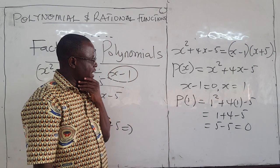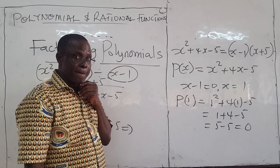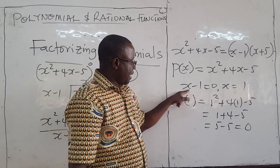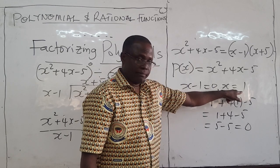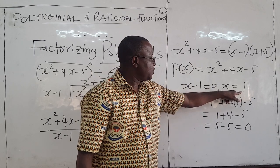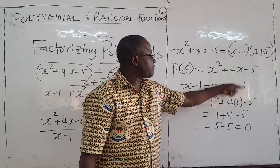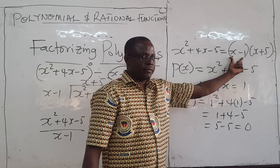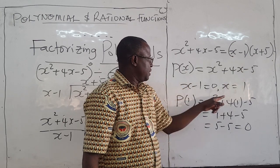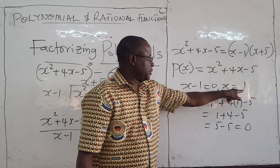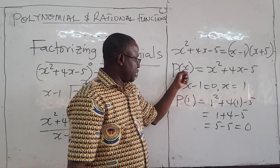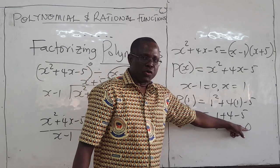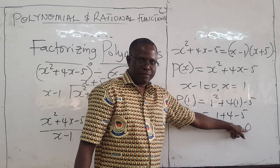What happens if I plug in 1 into this expression? p(1) will equal 1 squared plus 4 times 1 minus 5, which is 1 plus 4 minus 5, equals 5 minus 5, which equals zero. So x equals 1, obtained from the factor x minus 1, makes the polynomial equal zero.